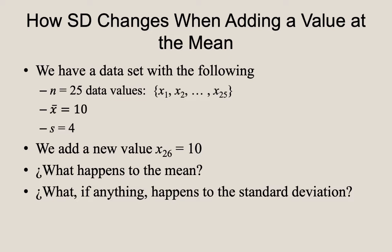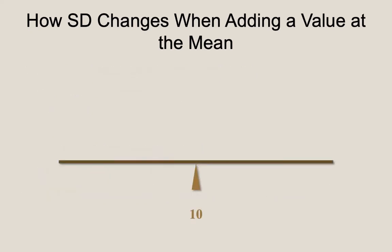Welcome back. Let's see how your responses align with my approach to answering these questions. For the first question, the mean would stay the same. If we think about the mean of the sample using the balance beam analogy, the data laid out along a balance beam would balance perfectly at the position 10. And we know this even if we don't know the actual location of the data values along the balance beam.